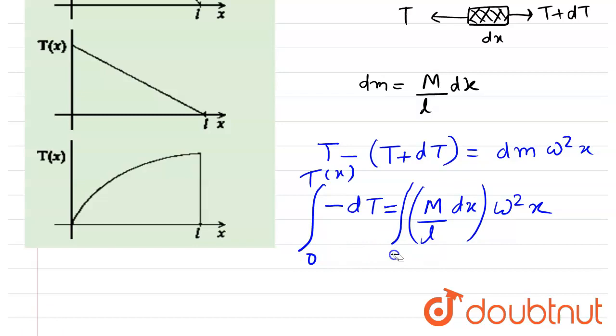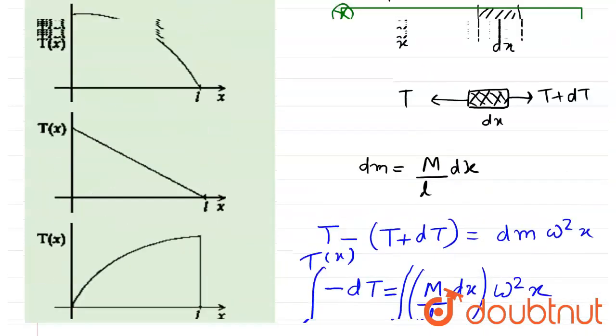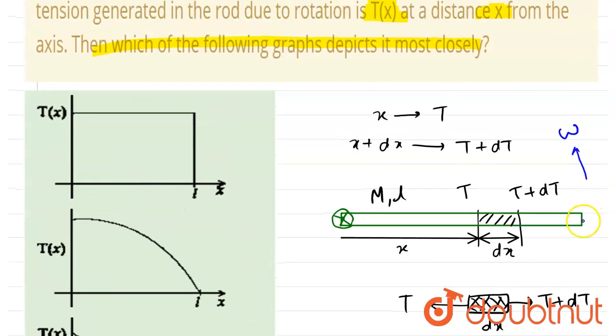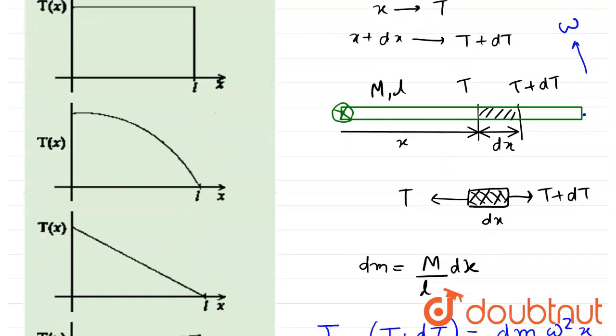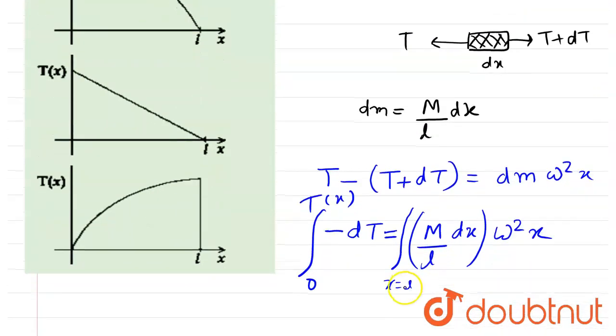So I will take x varying from x equals l. Since at x equals l, tension will be 0. If you see the diagram, at the end point there is no mass, so there won't be any tension at this point. At x equals l, the tension is 0.